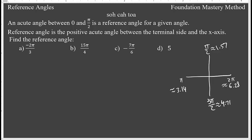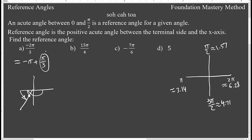First, let's try negative 2π/3. This measure is less than π, so I'm taking negative π and adding π/3. Negative π goes here, and then you come a little more on this side because it's positive. So your reference angle is π/3, and we are in the third quadrant for this one.